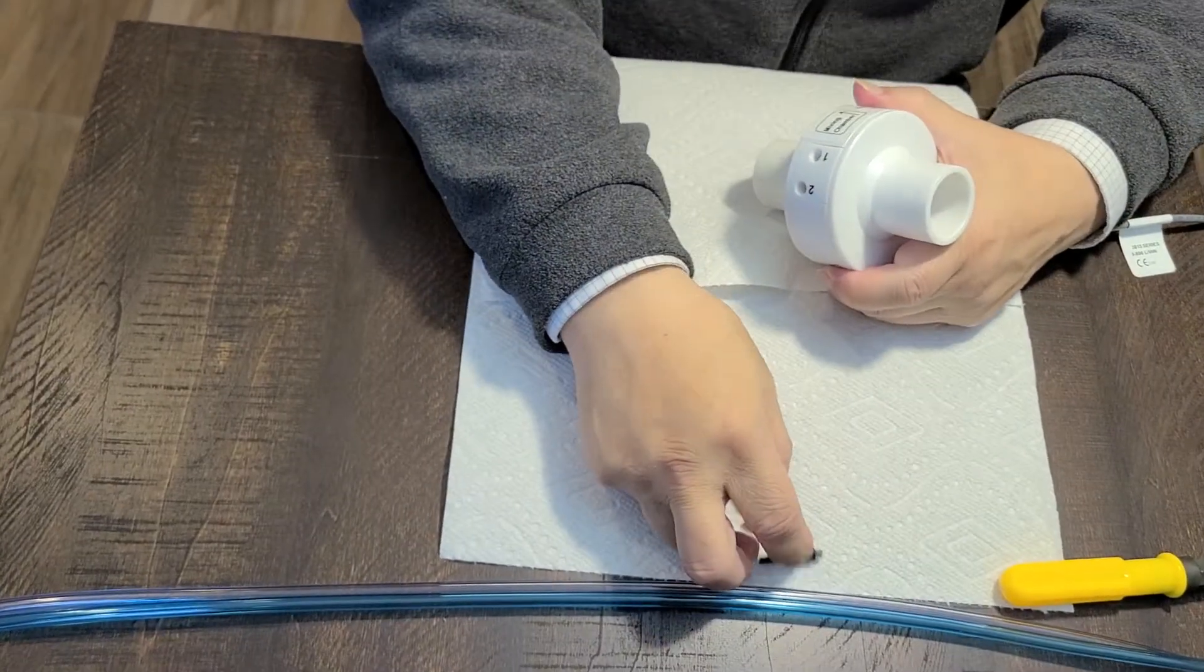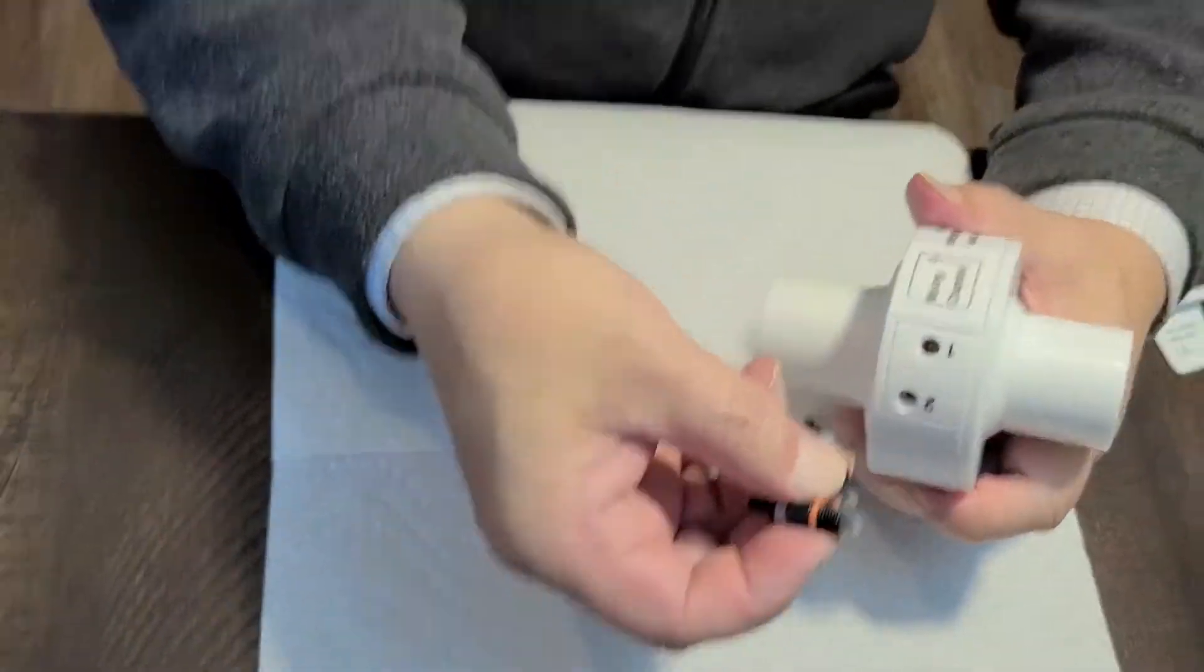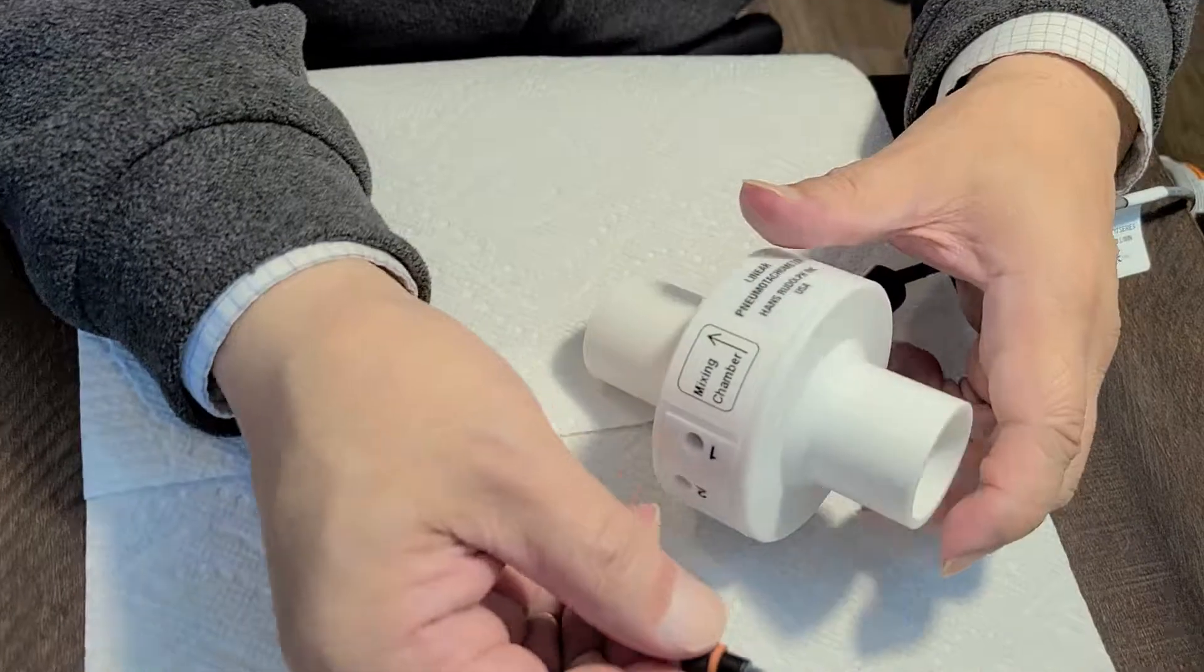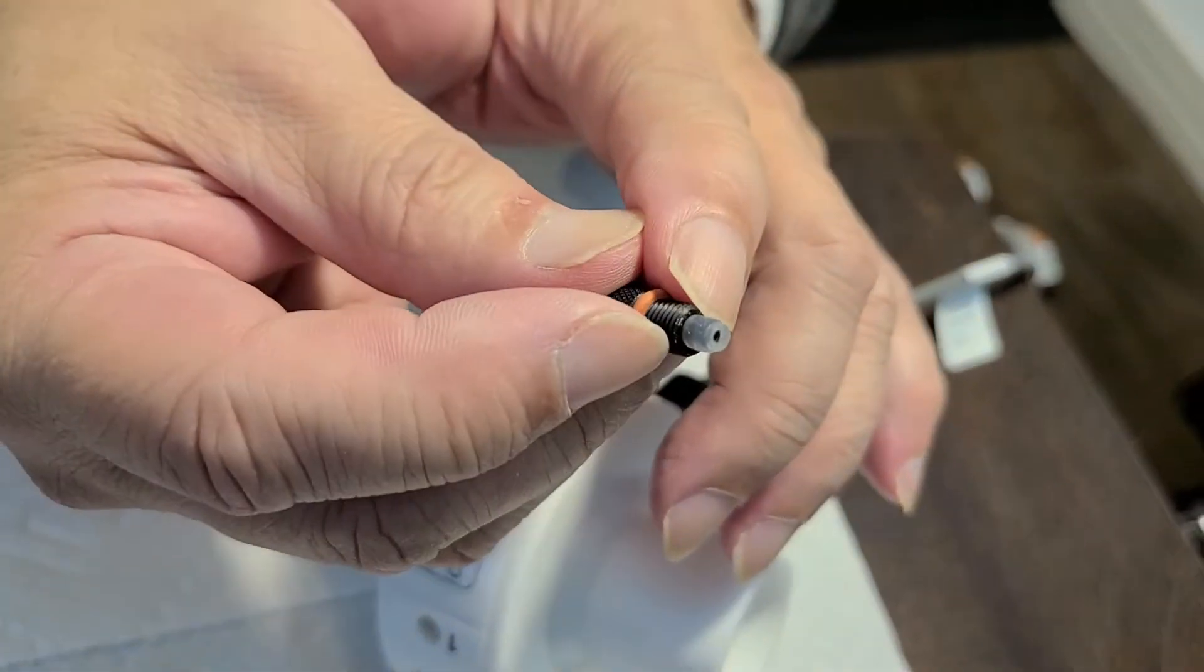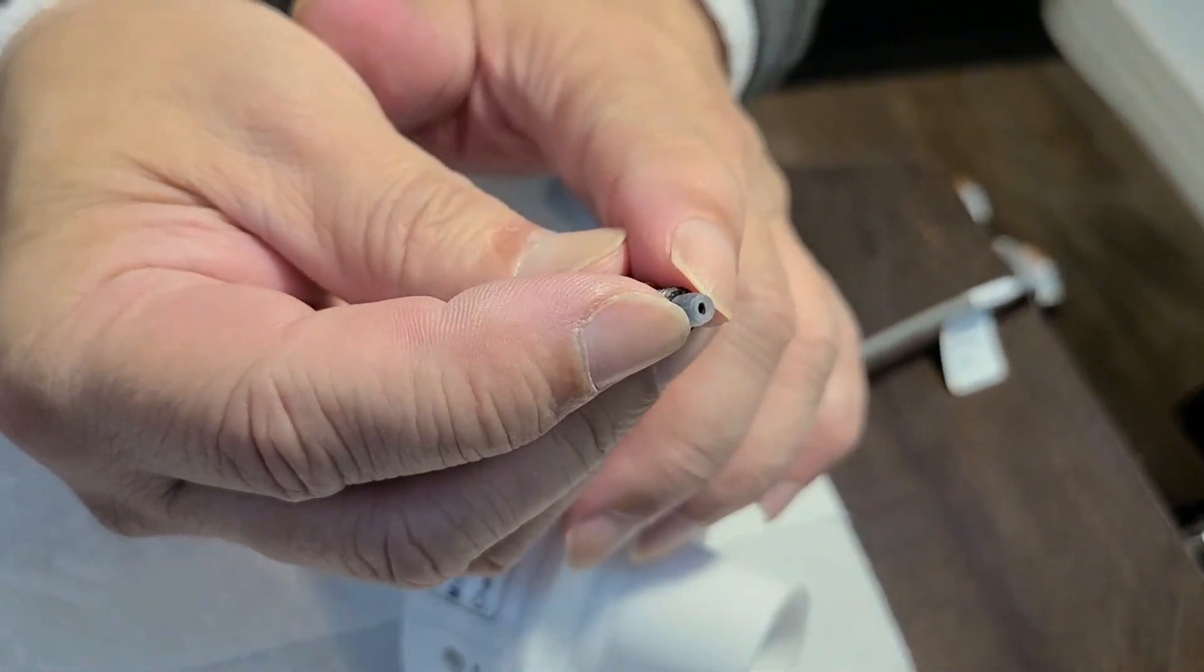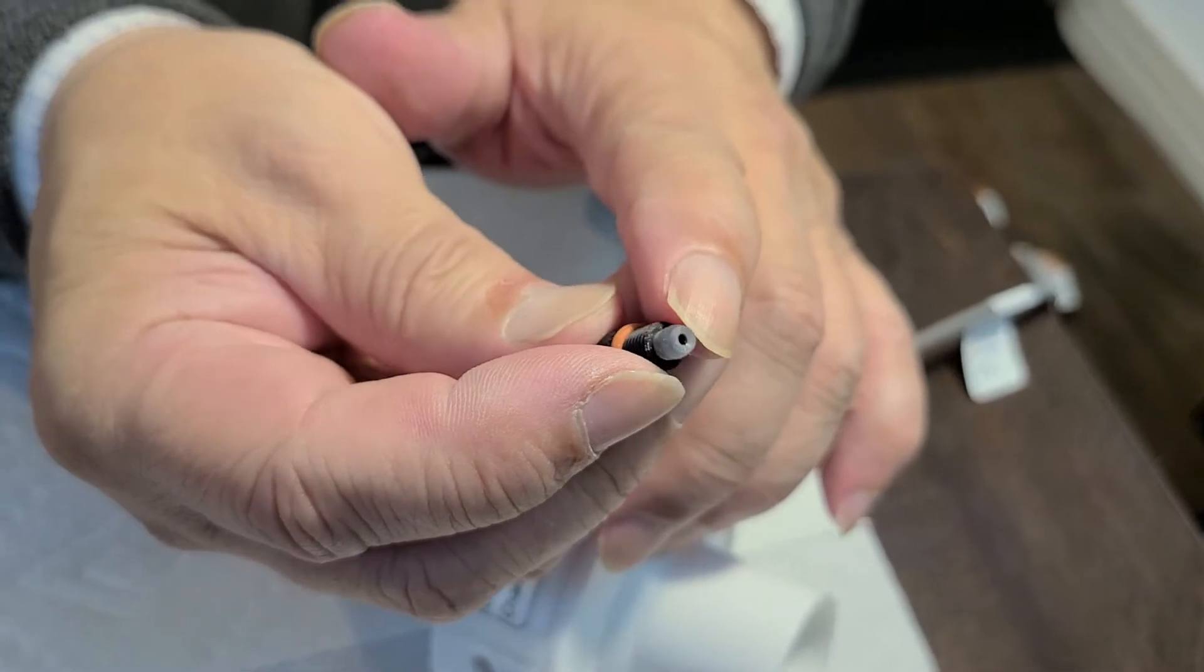Now, next step is put the black connector back in. Black connector has a tiny silicone seal that has a protruding portion.